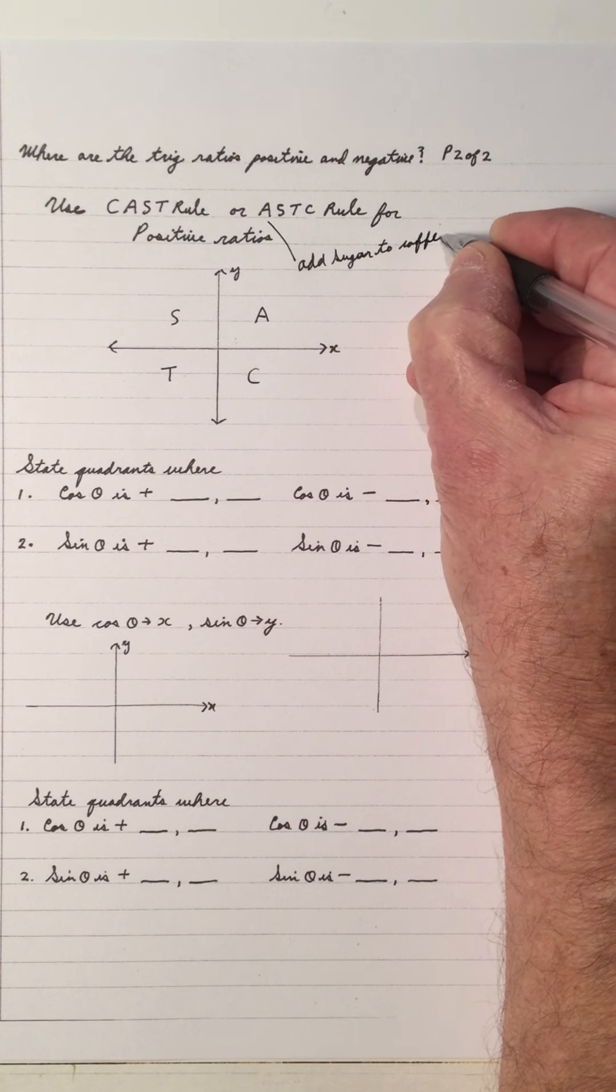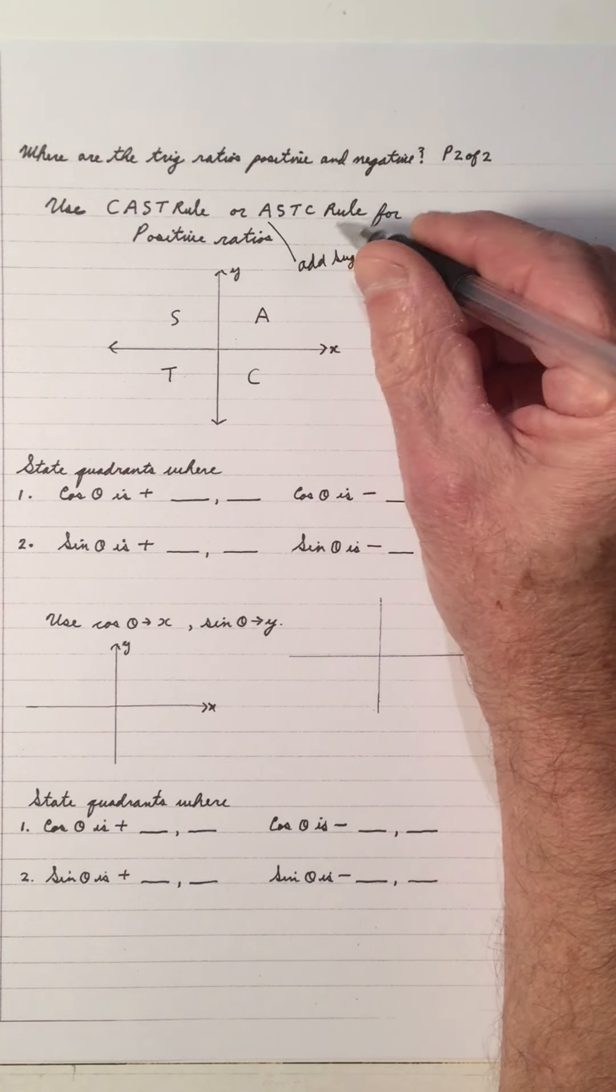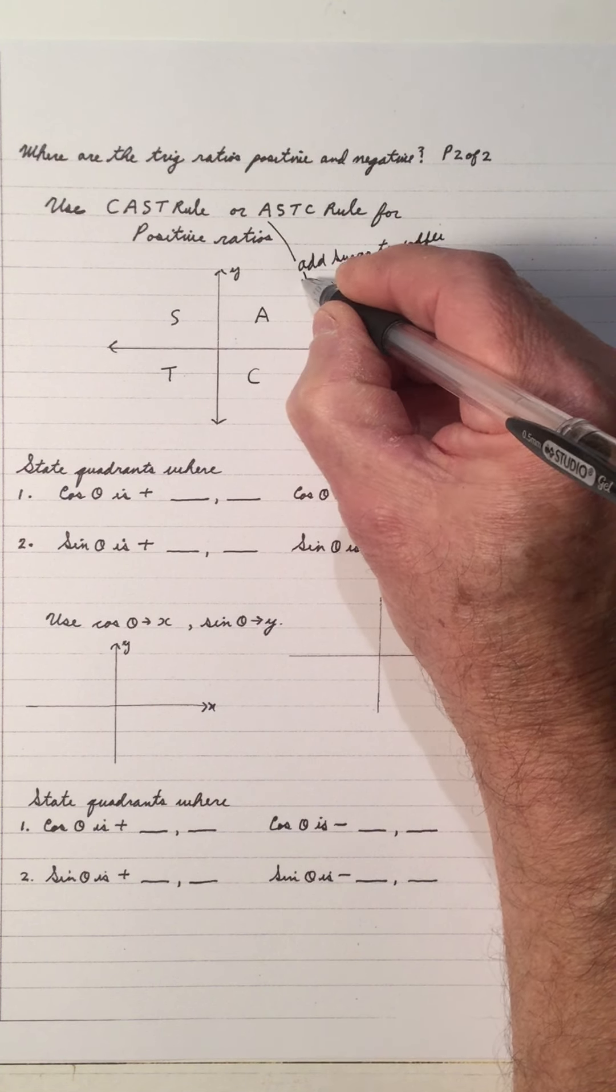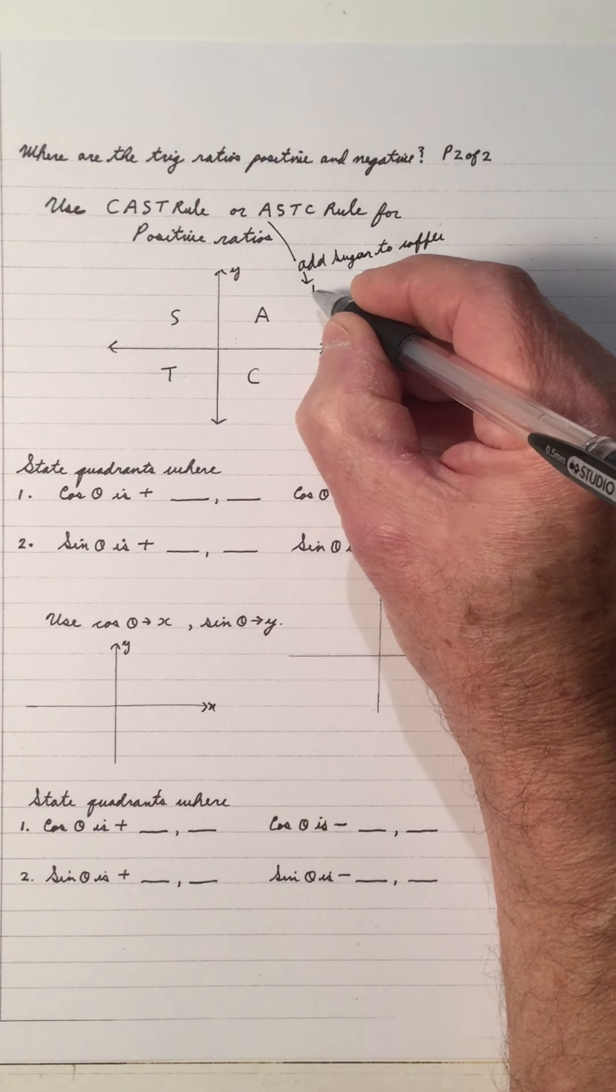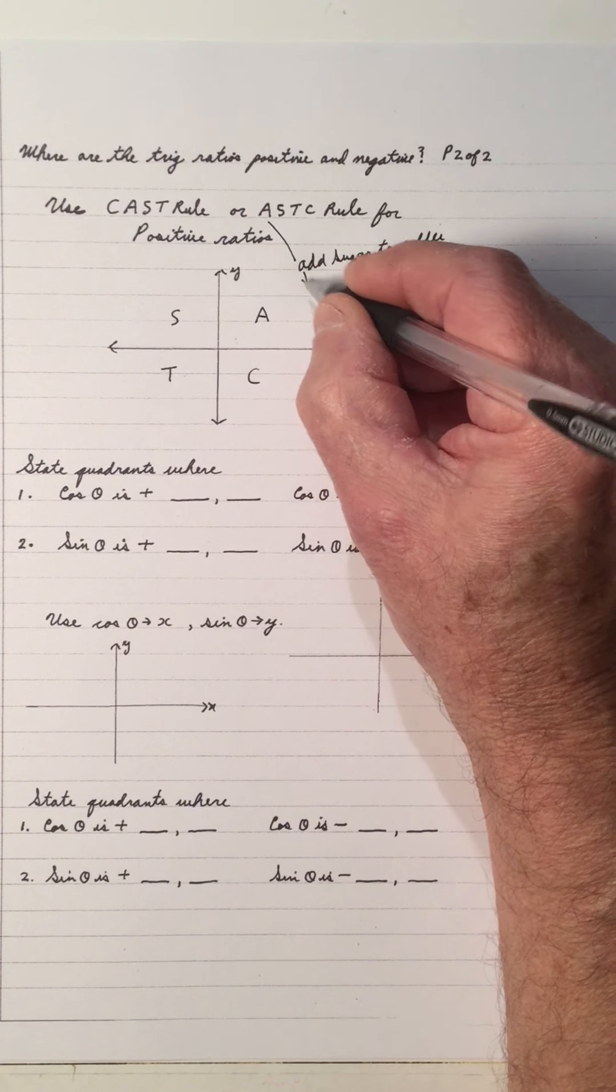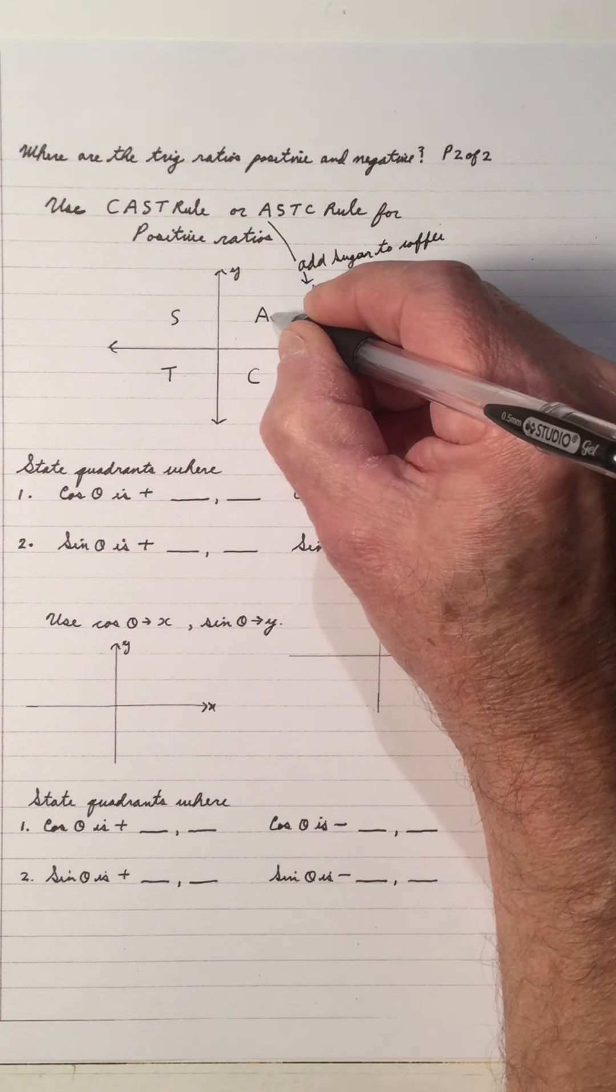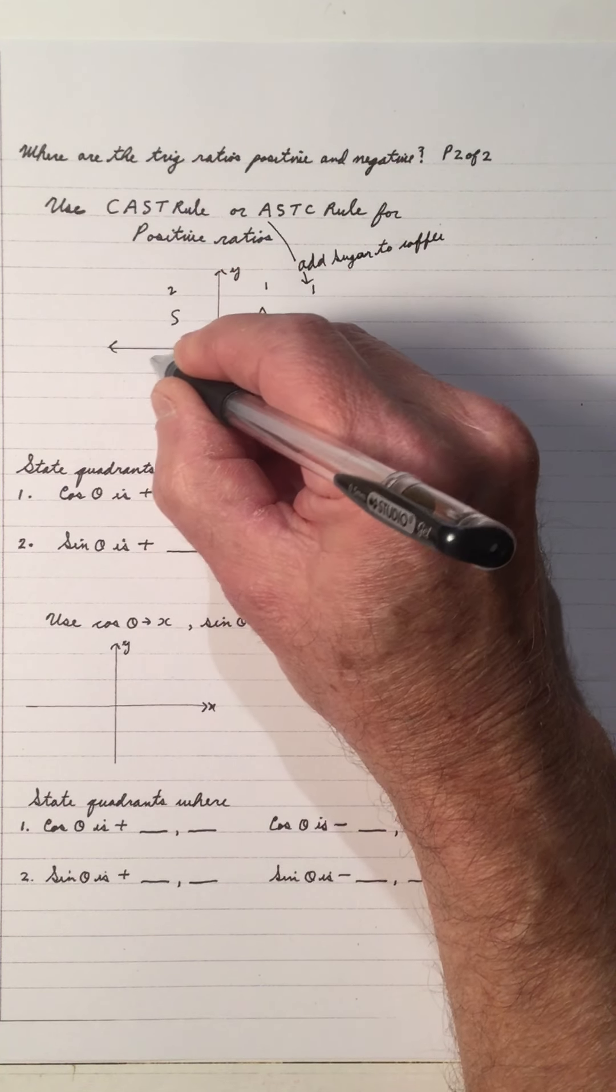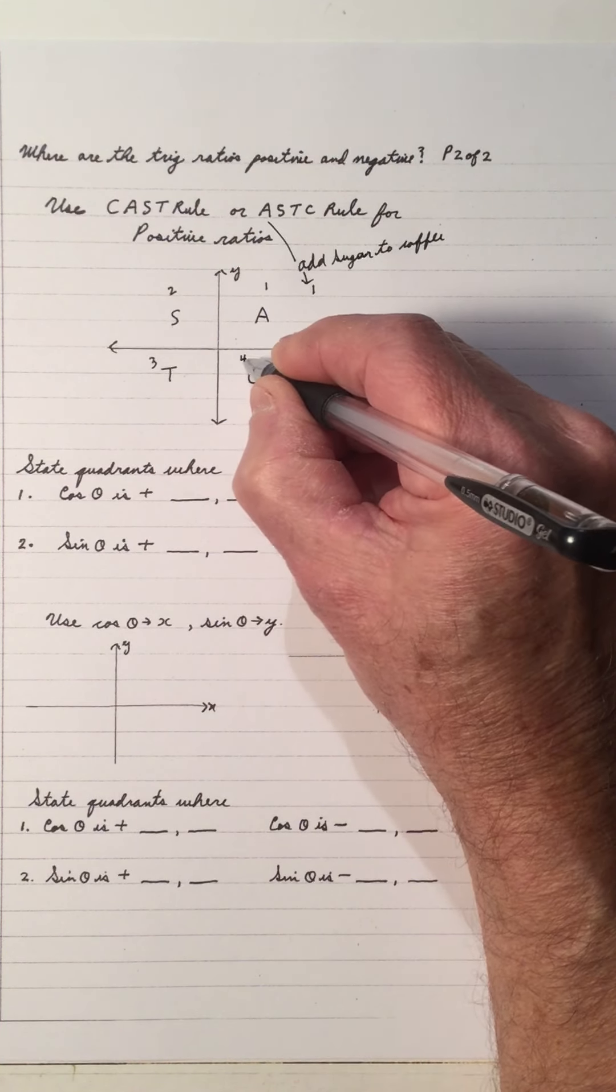And why do I like this ASTC, add sugar to coffee? Because A is starting in quadrant 1. If A is the first letter in the alphabet and you start in quadrant 1, this is quadrant 1, this is quadrant 2, this is quadrant 3, and this is quadrant 4.